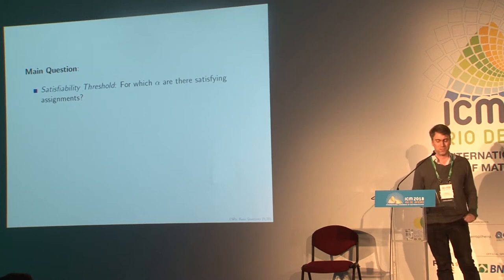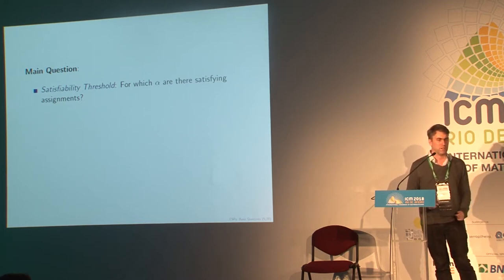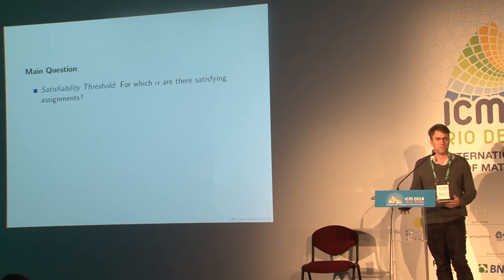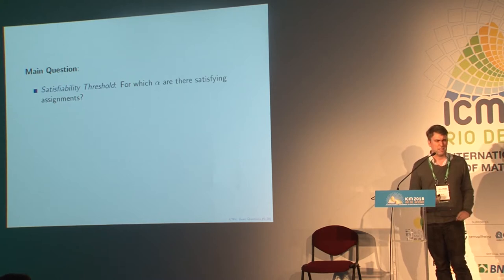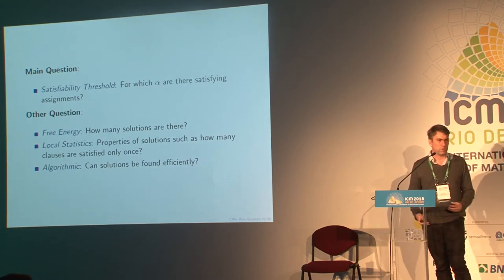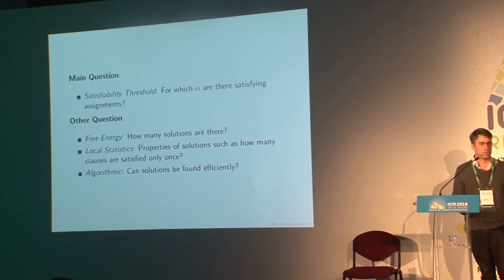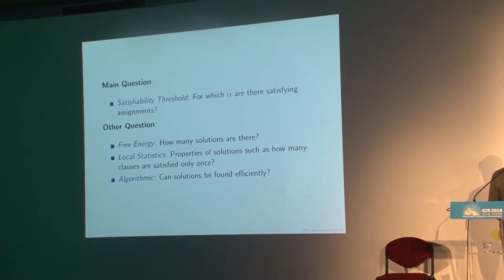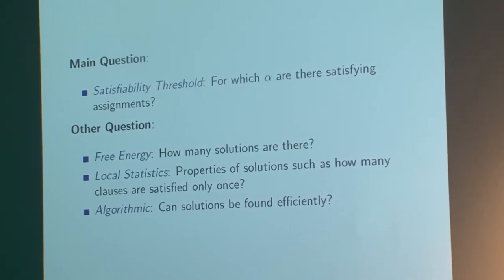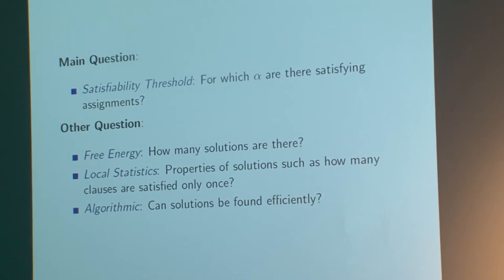What are the questions we're interested in? The first is just: when do you have solutions? What is the density of constraints such that there are any solutions to the random CSP? And then, once you know that, you can ask more detailed questions: how many solutions are there? What does a typical one look like if you choose a uniformly random solution? And a more algorithmic question: can you efficiently find a solution? That one we probably know the least about.